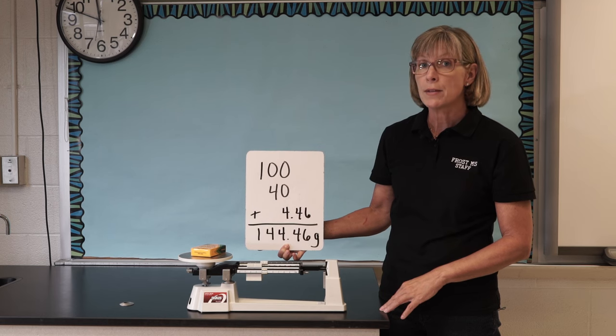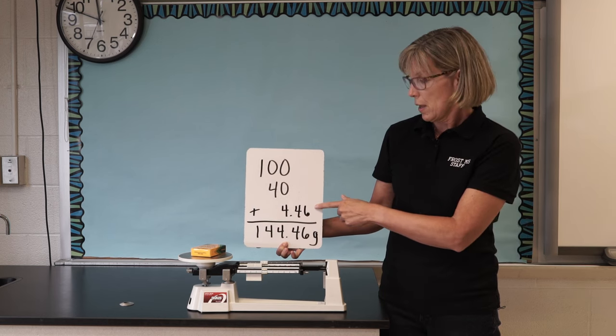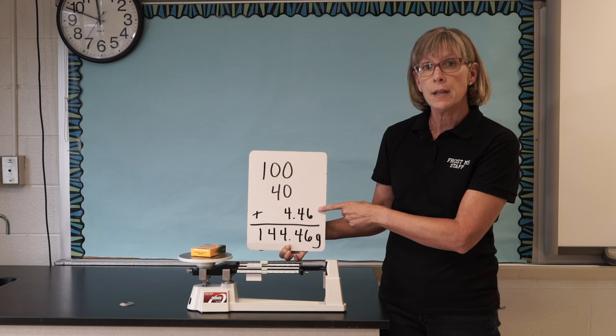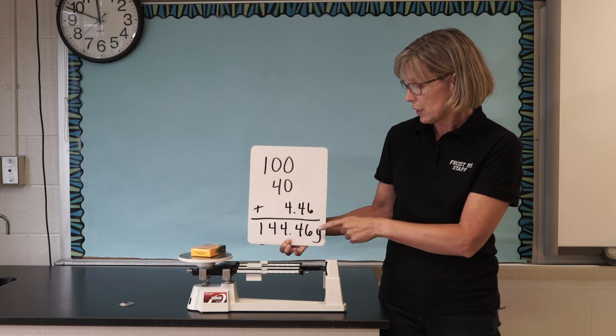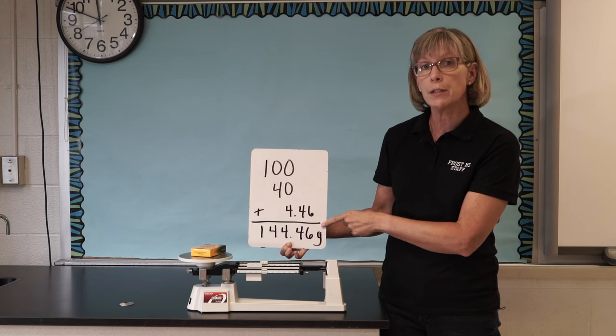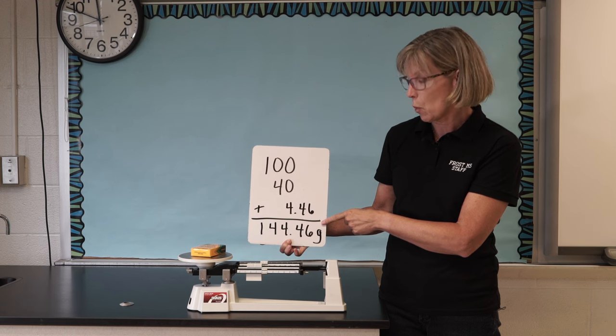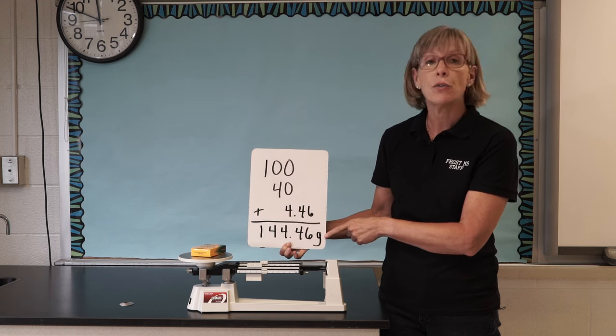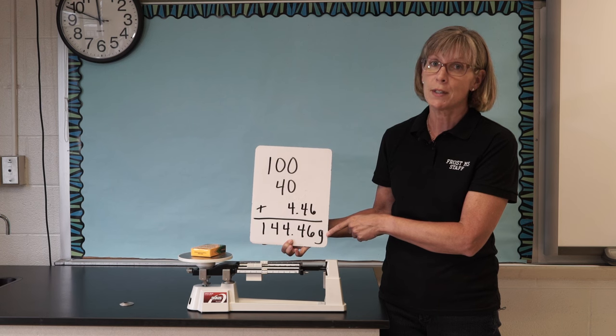Finally, we write the mass of the front rider, which is 4.46. Add all three together to get the total mass of our object, which is 144.46. And don't forget the last thing, which is to put your units in. In this case, mass is measured in grams.